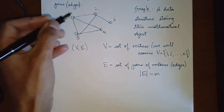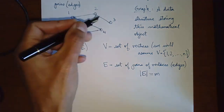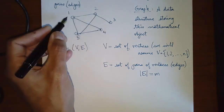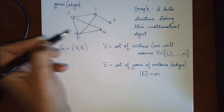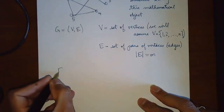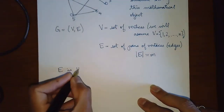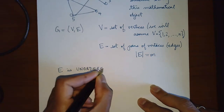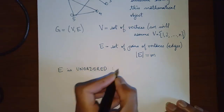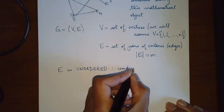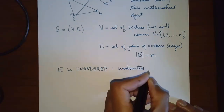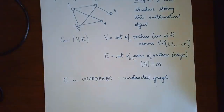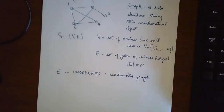So these are the pairs. In this graph you have five vertices and you have the pairs (1,2), (2,3), (1,4), (1,5), (2,5), and (5,4). If E is unordered, then this is called an undirected graph. This graph here is undirected.